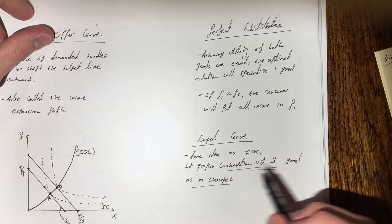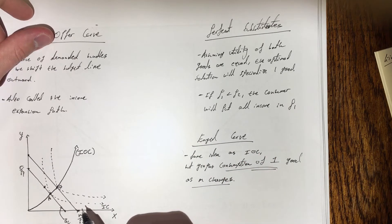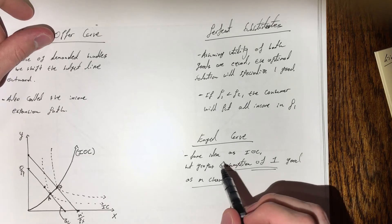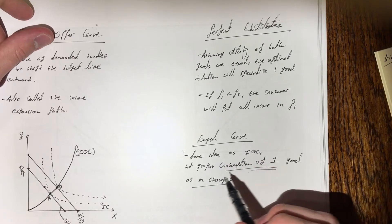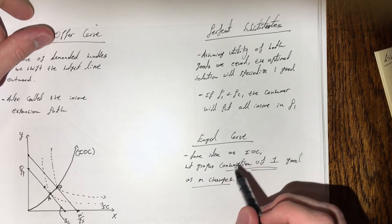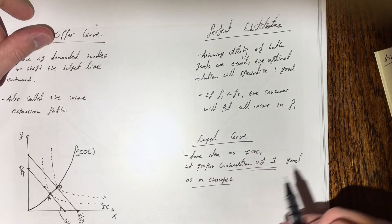Now a quick overview of the Engel curve. Very similar in nature to the income offer curve, it just changes slightly in the sense that we're graphing the consumption of one good directly as a change in m, and we'll see an example of that on the next page.